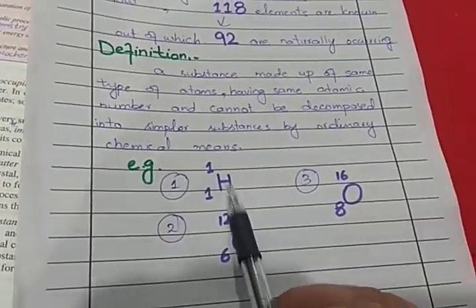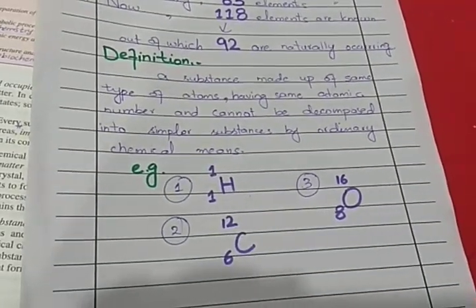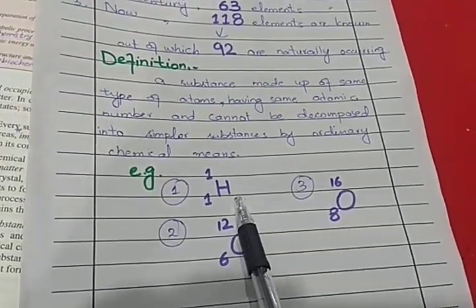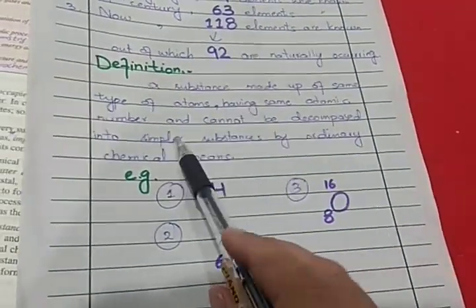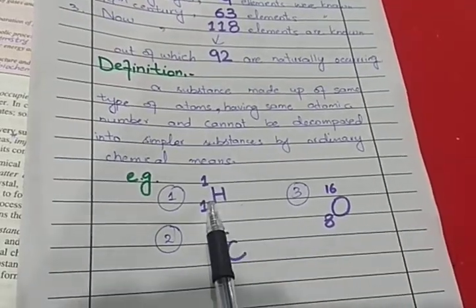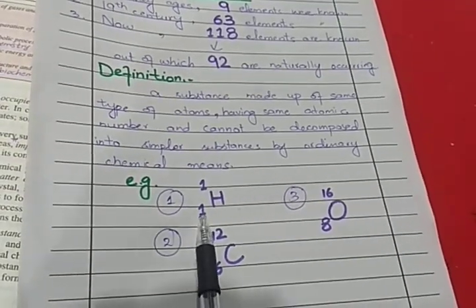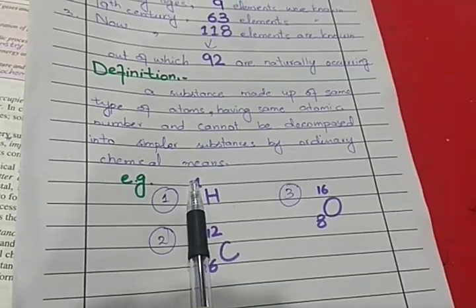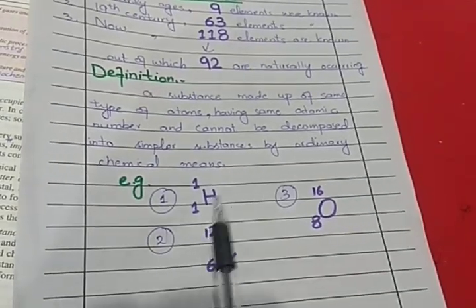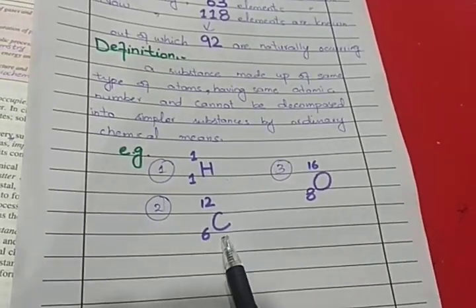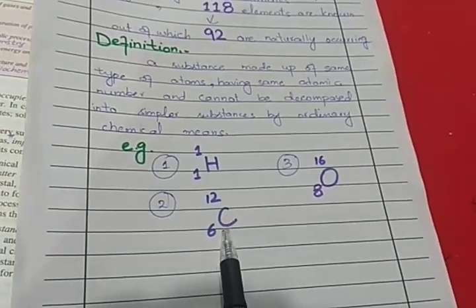For example, hydrogen is an element made of hydrogen atoms — the same type of atoms with the same atomic number. We cannot further break down hydrogen. Similarly, carbon has an atomic number of 6 and a mass number of 12.